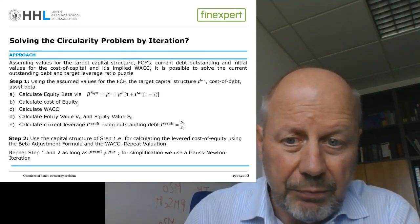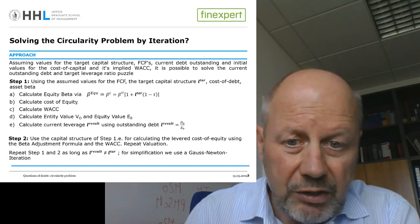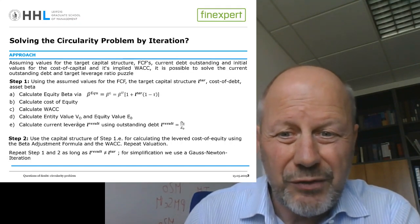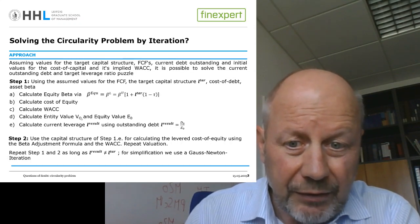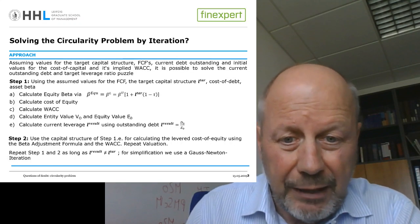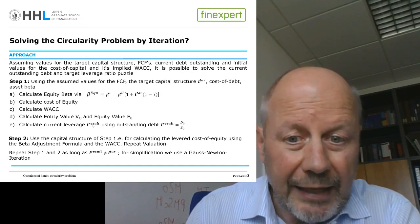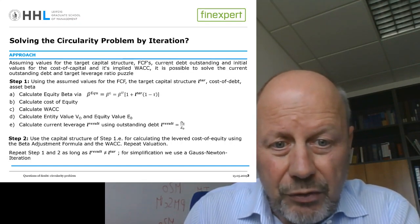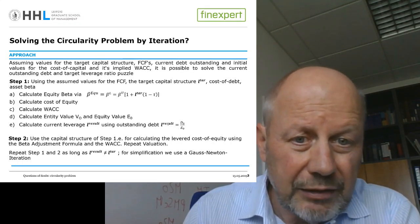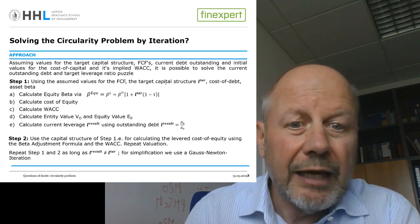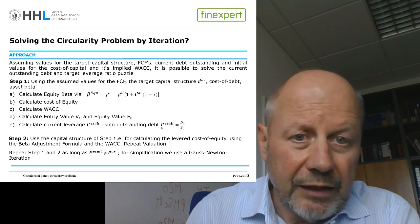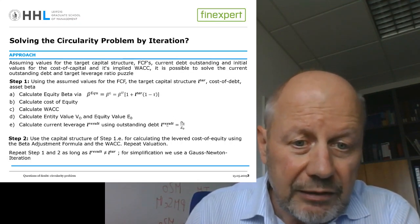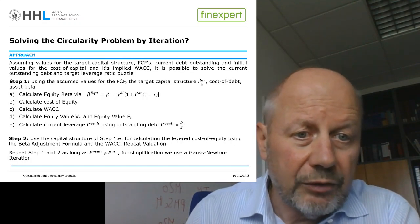Knowing the equity beta and plugging it into the Capital Asset Pricing Model gives us the cost of equity. Once we know the cost of equity, the cost of debt, and the leverage, we can calculate the WACC. Combining the WACC with the free cash flow gives us the enterprise value. Deducting the value of net debt from the enterprise value gives us the equity value. The last step is to calculate the resulting leverage by combining net debt and equity. The iteration then restarts the entire process by plugging the resulting leverage back in at the beginning and recalculating everything. This continues until the resulting leverage equals the leverage plugged in at the start.